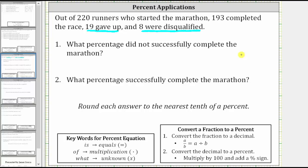To find the percentage that did not successfully complete the marathon, let's first write the fraction, then convert the fraction to a percent. Since 27 out of 220 runners did not successfully complete the marathon, we have the fraction 27 over 220.